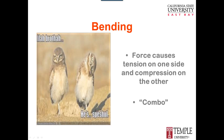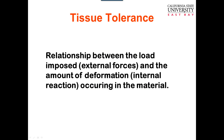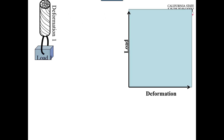So back to the key concept: injury is when load is greater than tissue tolerance or strength. Tissue tolerance is the relationship between the load imposed — the external force — and the amount of deformation or internal reaction that occurs in the material. When you plant and twist, the torsional load on your tibia can be fine as long as it doesn't create too much deformation in the bone that would result in a spiral fracture.